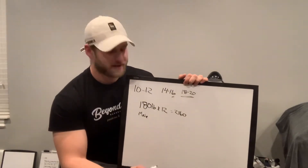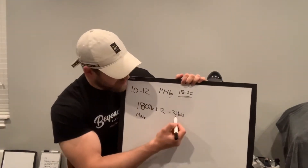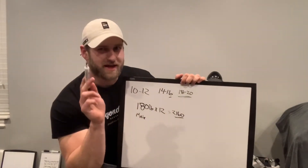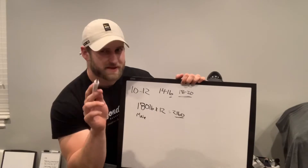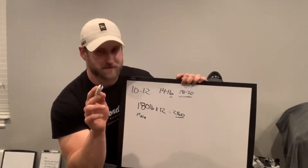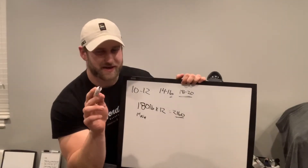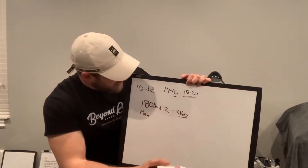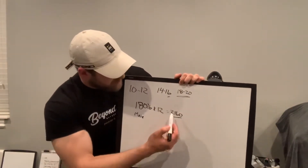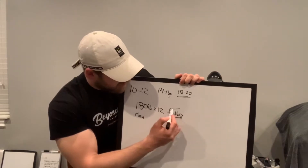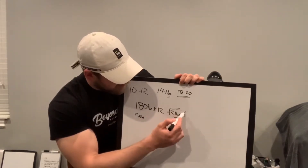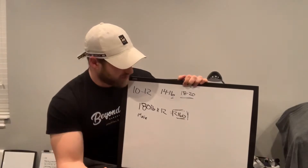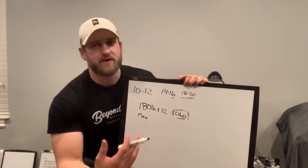I'll assume I did the math right — I haven't been in a high school math class for a while and I'm used to using a calculator. Anyway, 2,160 calories is the rough starting point for where we want this person's calories to be so they can begin losing weight.